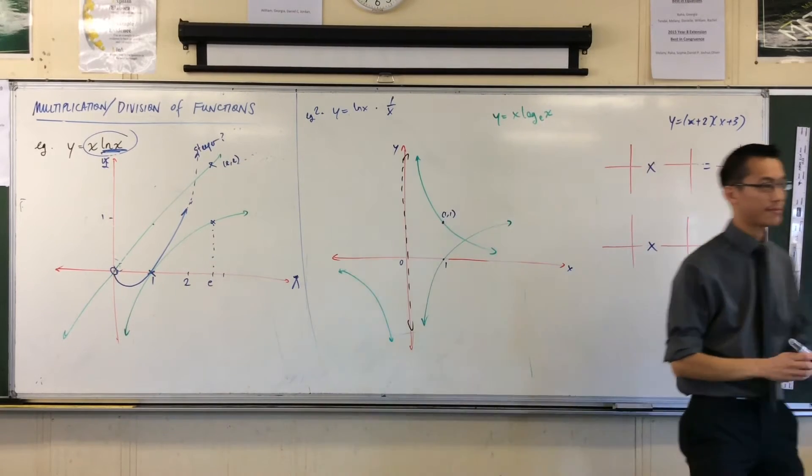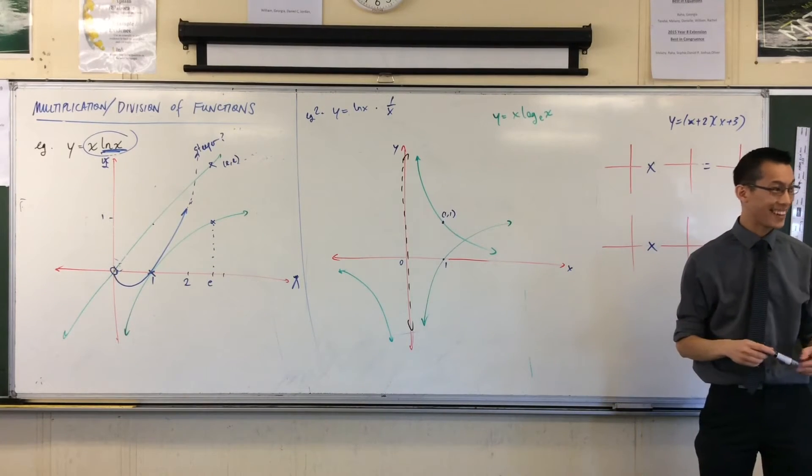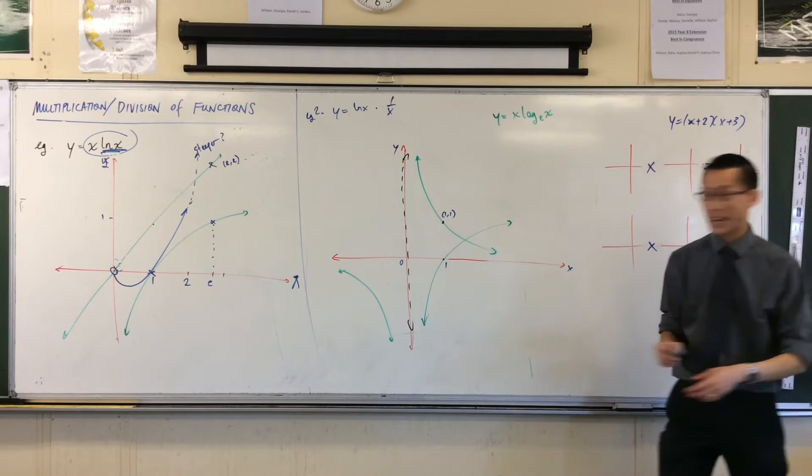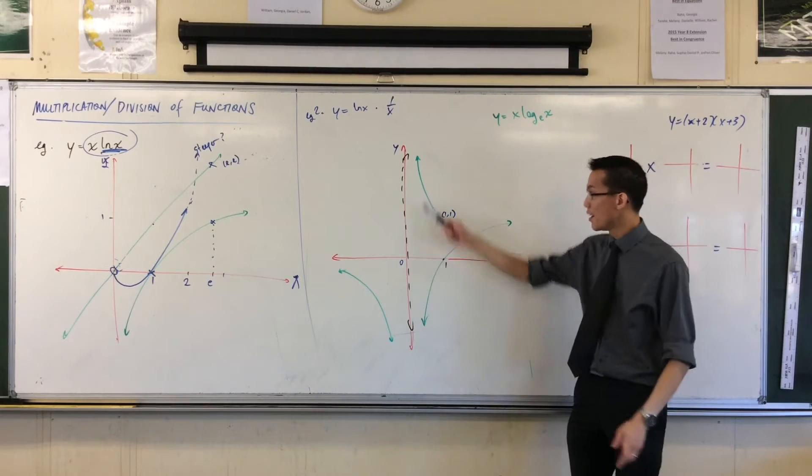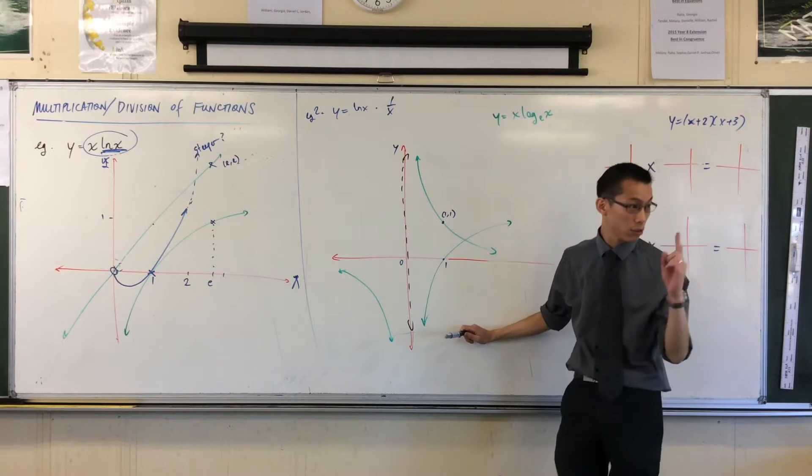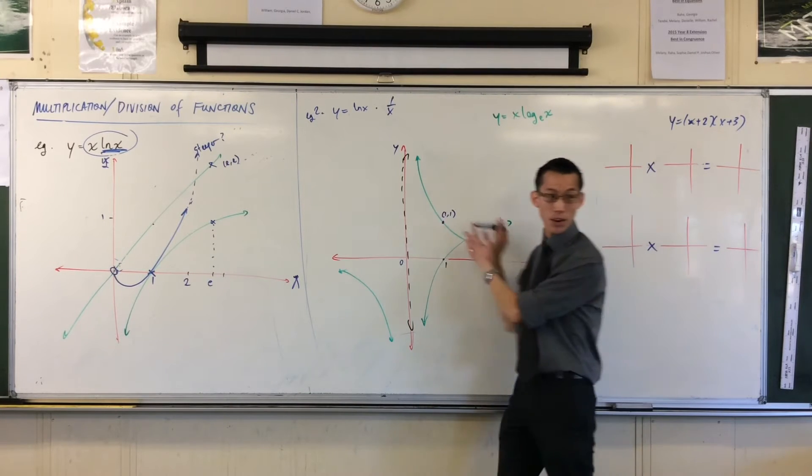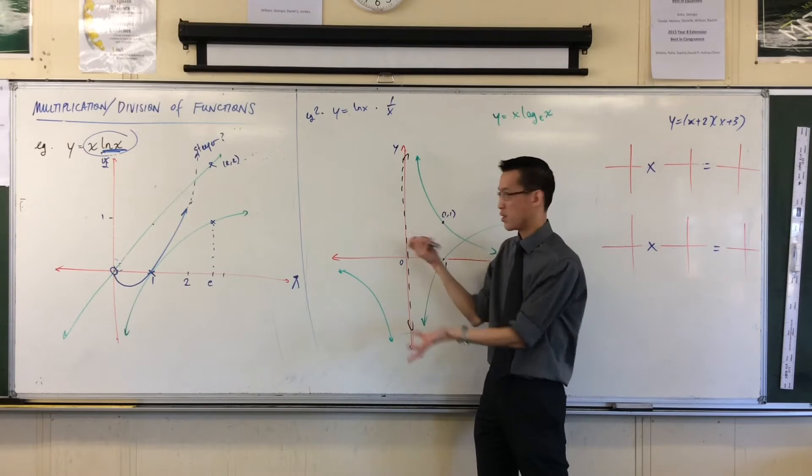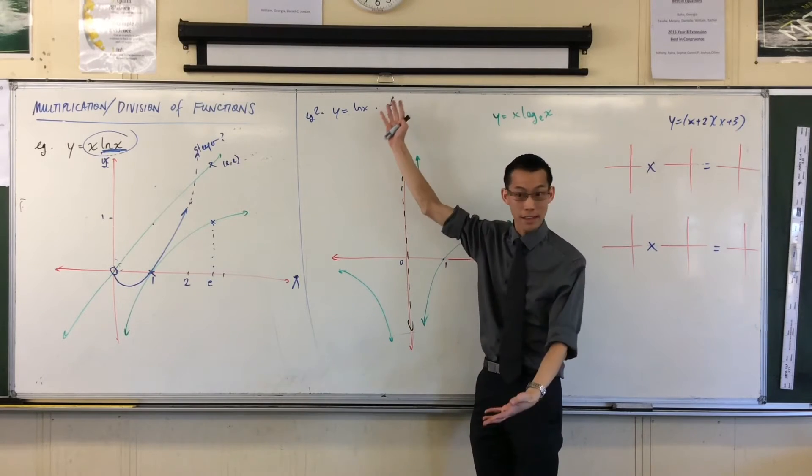Anyone want to have a crack? Is it because this one approaches the y-axis? Okay, it does approach. You've got this one approaching the y-axis there, you've got this one approaching the y-axis. So there's clue number one. Both of these are asymptotic to x equals 0, so therefore it's reasonable to assume the whole thing is.